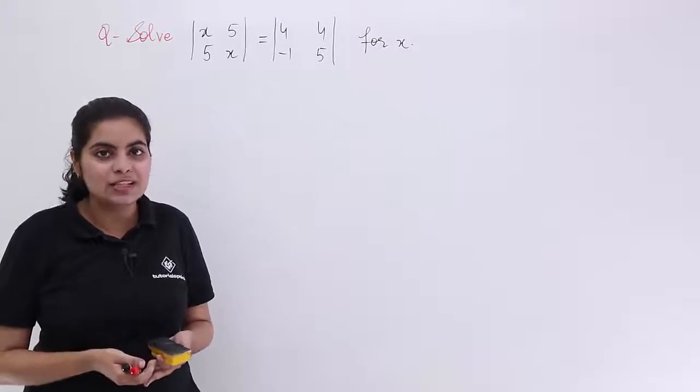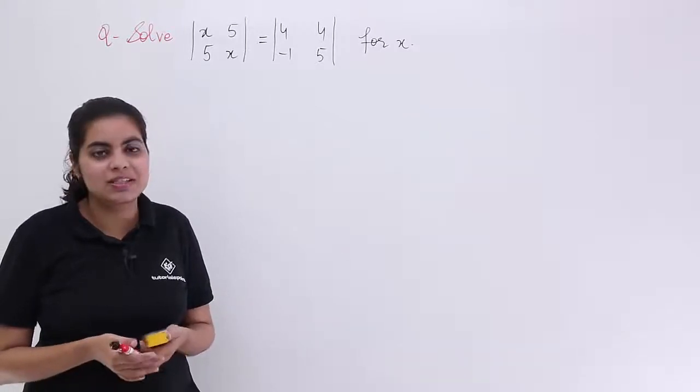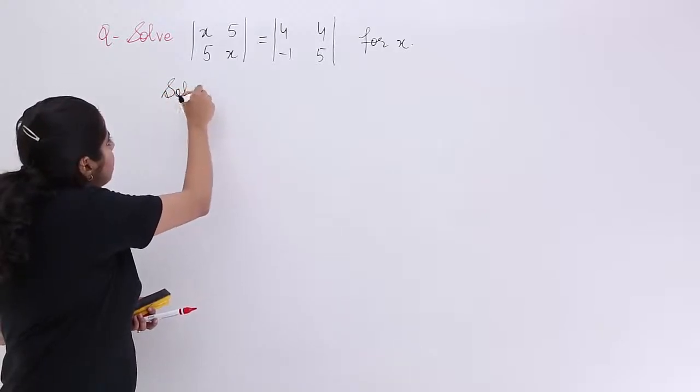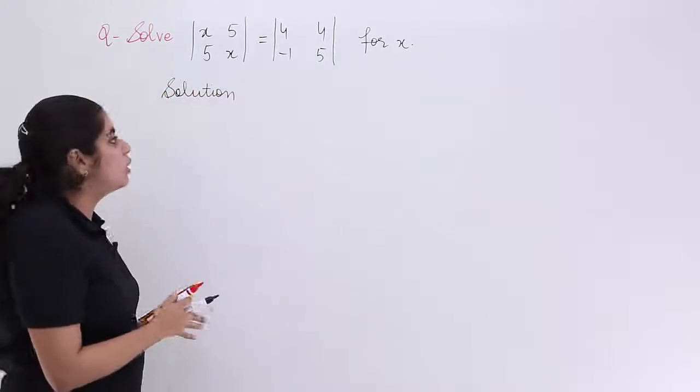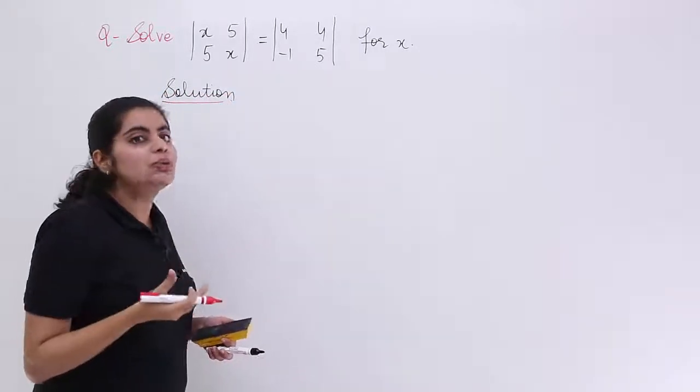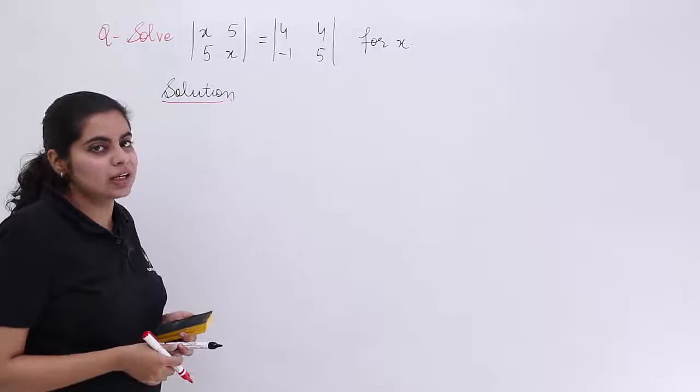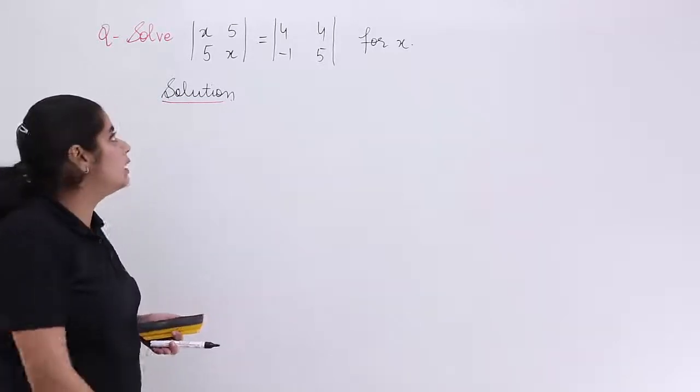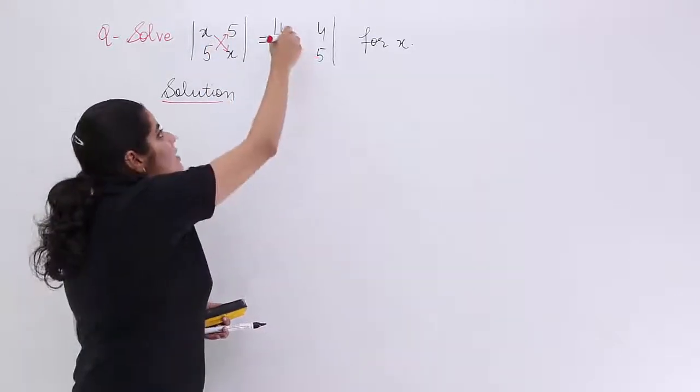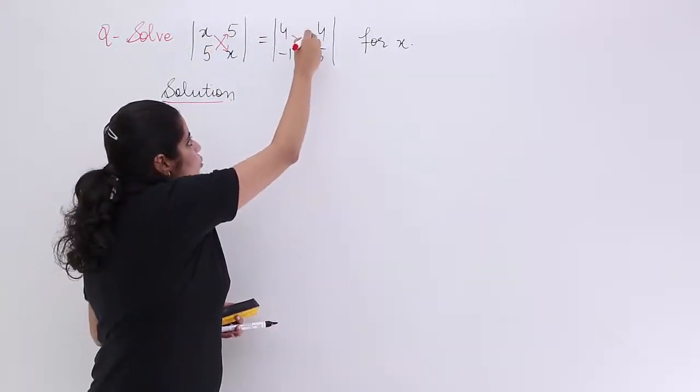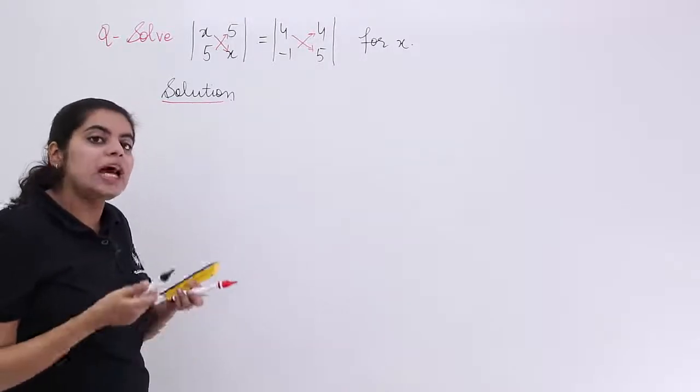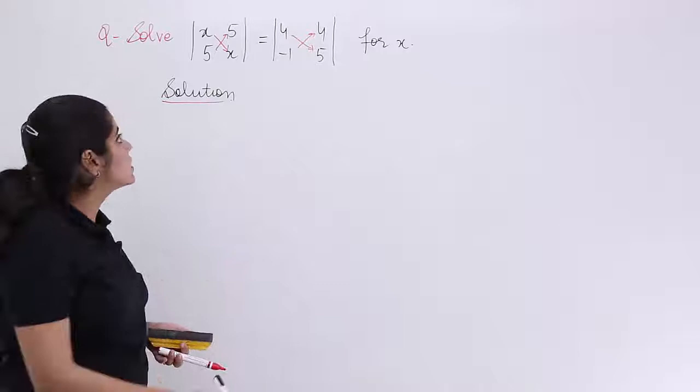We'll be writing the heading as solution. Now I have to solve for x. Since it is an order 2 determinant, I have a trick and we'll be going about that trick only. We have to cross multiply things here and in the second determinant also. After cross multiplication, we'll be getting some expressions and we will equate them.